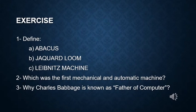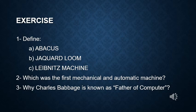Now here we have a small exercise based on the topics discussed in this video. First question: define Abacus, Jacquard Loom, and Leibniz Machine. Second: which was the first mechanical and automatic machine? Third: why is Charles Babbage known as the Father of Computer? That's all for today's video. Thank you.